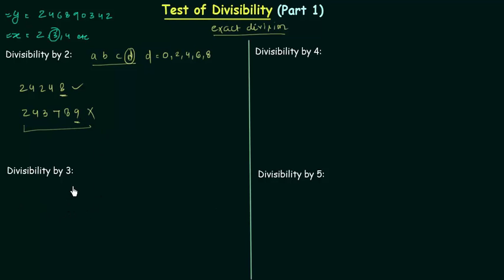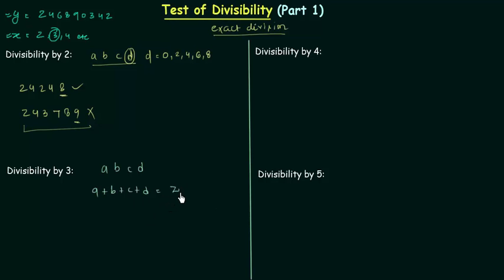Now we move to divisibility by 3. A number is divisible by 3 if the sum of its digits is divisible by 3. This is an interesting rule. If the number is ABCD, we compute A + B + C + D = Z. If Z is divisible by 3, then the number ABCD is divisible by 3.